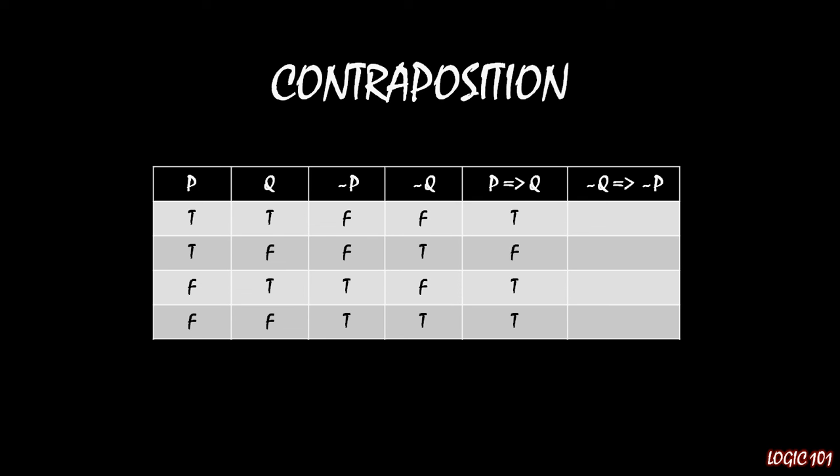And then for the sixth column, we do the implication for the negations, if not Q then not P. Again, the only way that this is going to be false is if not Q is true, the antecedent is true, and the consequent not P is false. And that is only the case in the second row. So we fill this in as true, false, true, true.